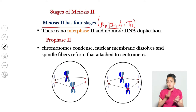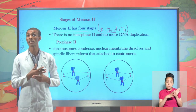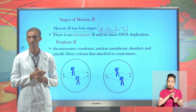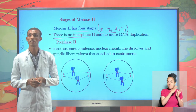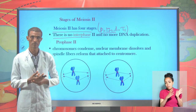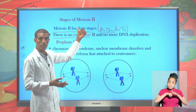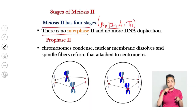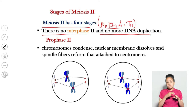Before meiosis cell division begins, the original chromosome must be copied, and this is held together by the centromere during meiosis I. But here, there is no more interphase — meaning there is no copying. Meiosis II begins from telophase I. The daughter cells produced during telophase I progress to prophase II, and there is no copying or duplication here.